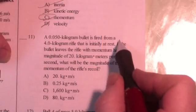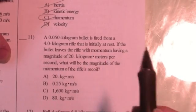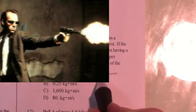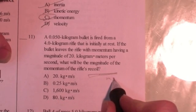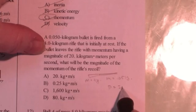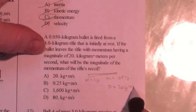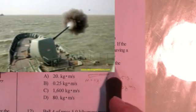A 50 gram bullet, a 0.05 kilogram bullet, is fired from a 4 kilogram rifle that's initially at rest. A gun at rest with a bullet in it. So the mass of the bullet is 0.05 kilograms. Mass of the gun is 4 kilograms. If the bullet leaves the rifle with a momentum having a magnitude of 20 kilogram meters per second, what would be the momentum of the rifle's recoil?